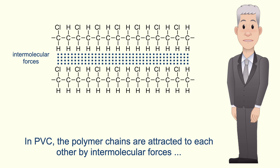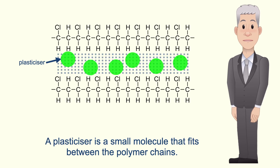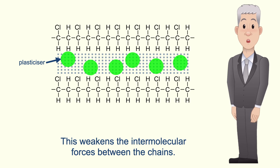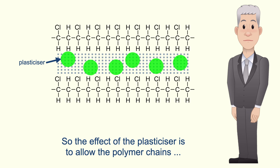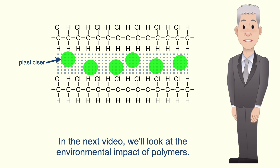In PVC the polymer chains are attracted to each other by intermolecular forces, including both permanent dipole-dipole interactions and London forces. A plasticizer is a small molecule that fits between the polymer chains, causing the chains to move further apart and weakening the intermolecular forces between them. So the effect of the plasticizer is to allow the polymer chains to move over each other, making the polymer flexible. In the next video we look at the environmental impact of polymers.